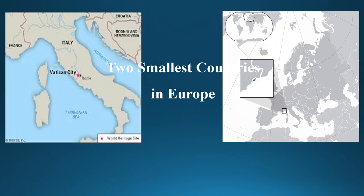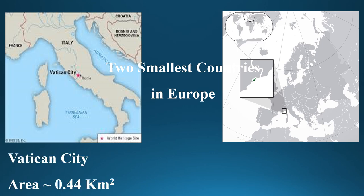The two smallest countries in Europe are Vatican City and Monaco. Vatican City is the smallest country in the world, with an area of only 0.44 square kilometers. Monaco is the second smallest country in Europe, with a total area of only 2 square kilometers.